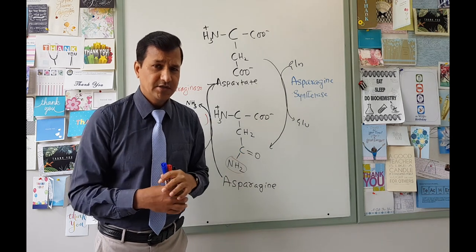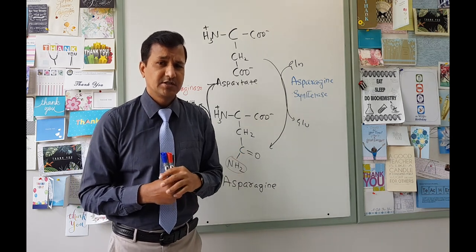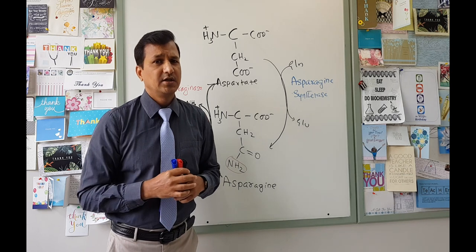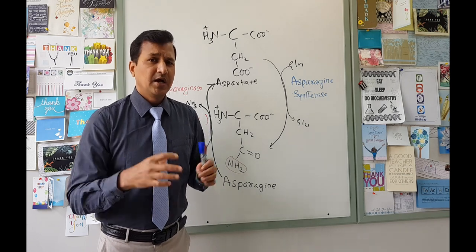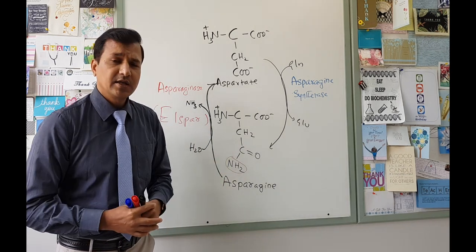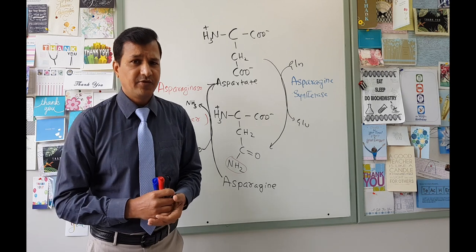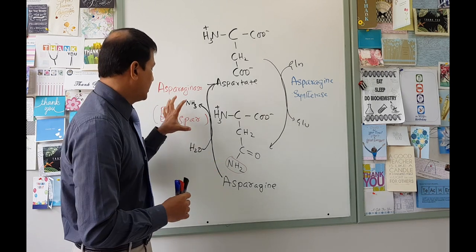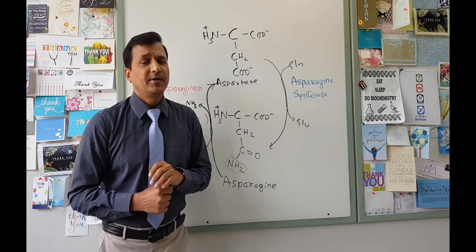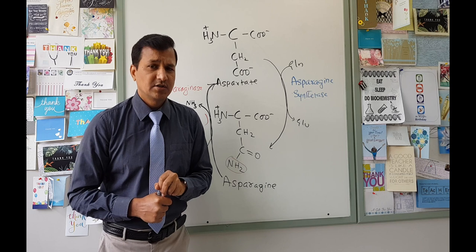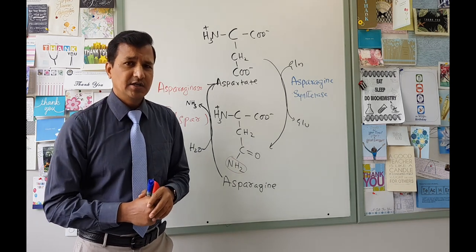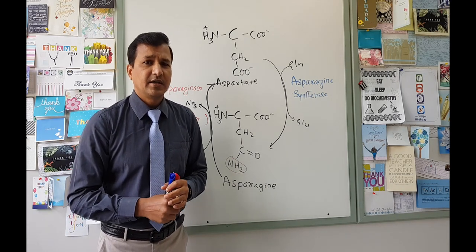So L-Spar will be effective in tumors that are deficient in asparagine synthetase enzyme, and one such tumor is acute lymphoblastic leukemia. I hope this video has helped you understand the mechanism of action of L-Spar and the biochemistry behind it. Thanks for watching and see you in my next video.